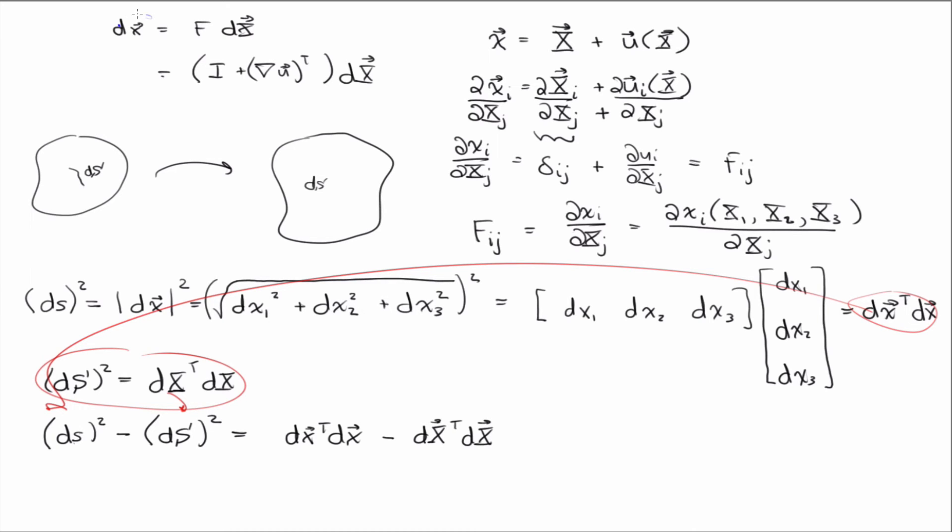But we also have this equation, which would, if we plug that in, the right hand side would all be in terms of d big X. Right? So let's do that. I'm going to plug in that equation. So I have dx transpose is F d big X transpose F d big X minus d big X transpose dx.